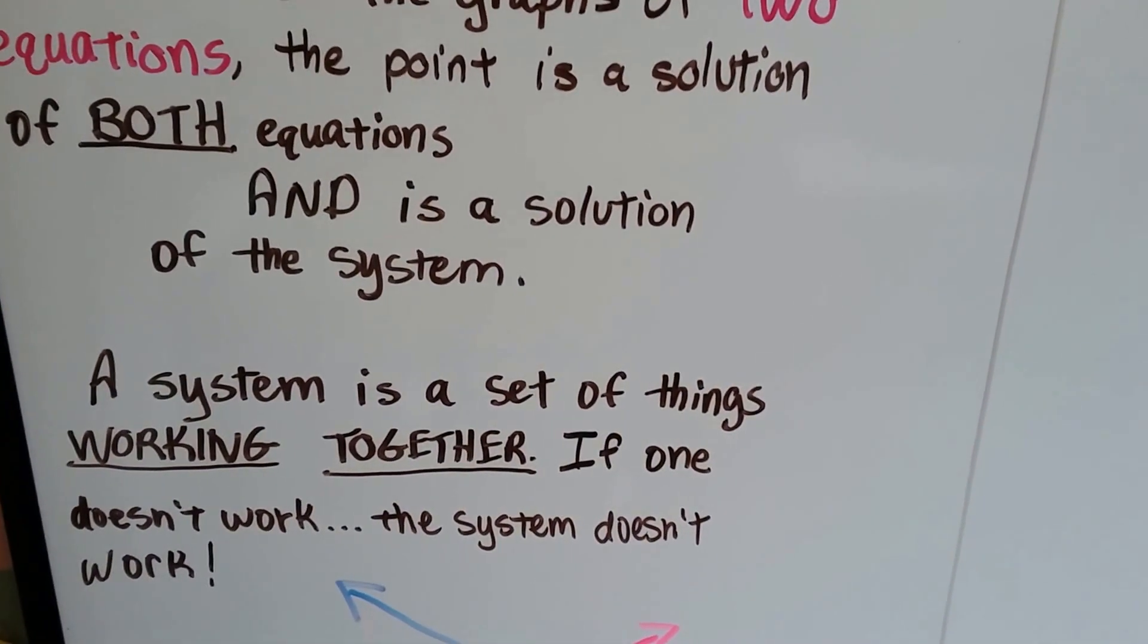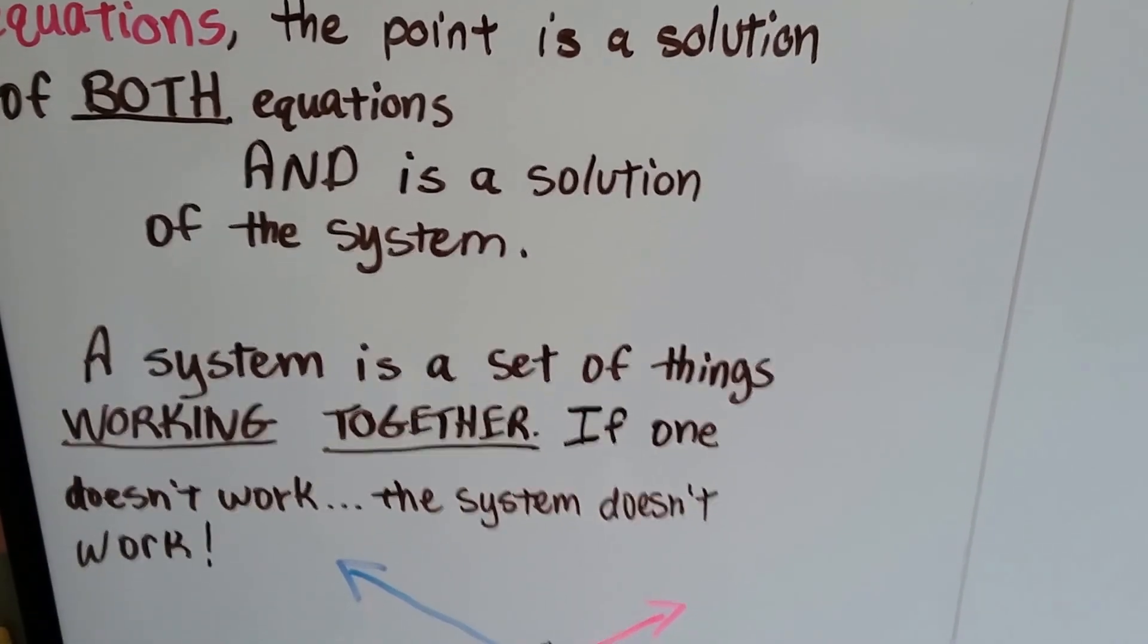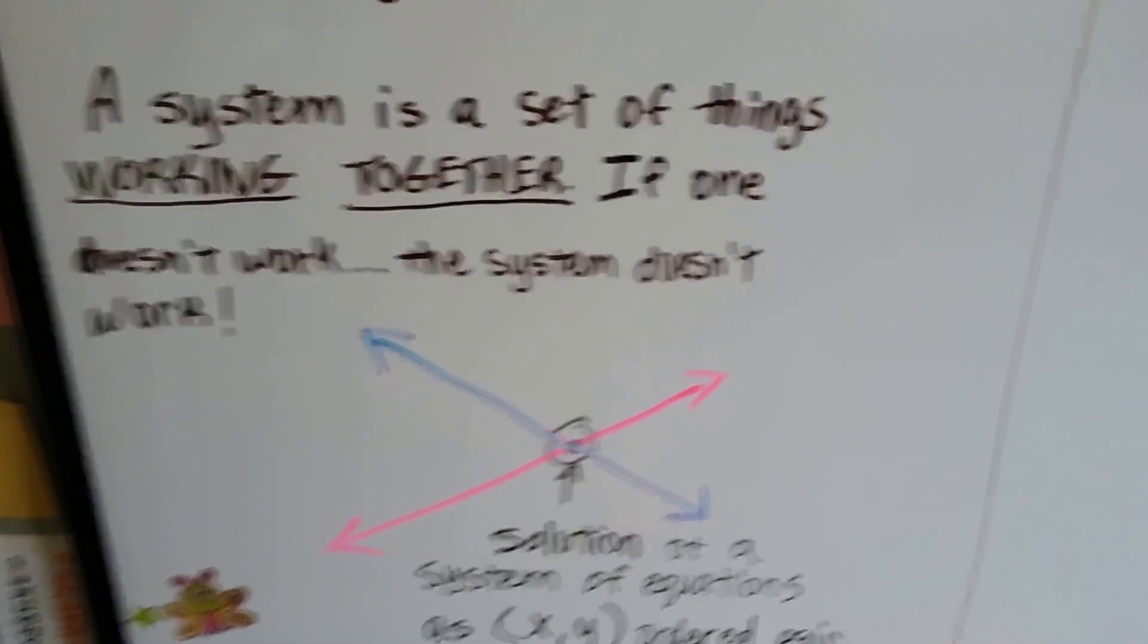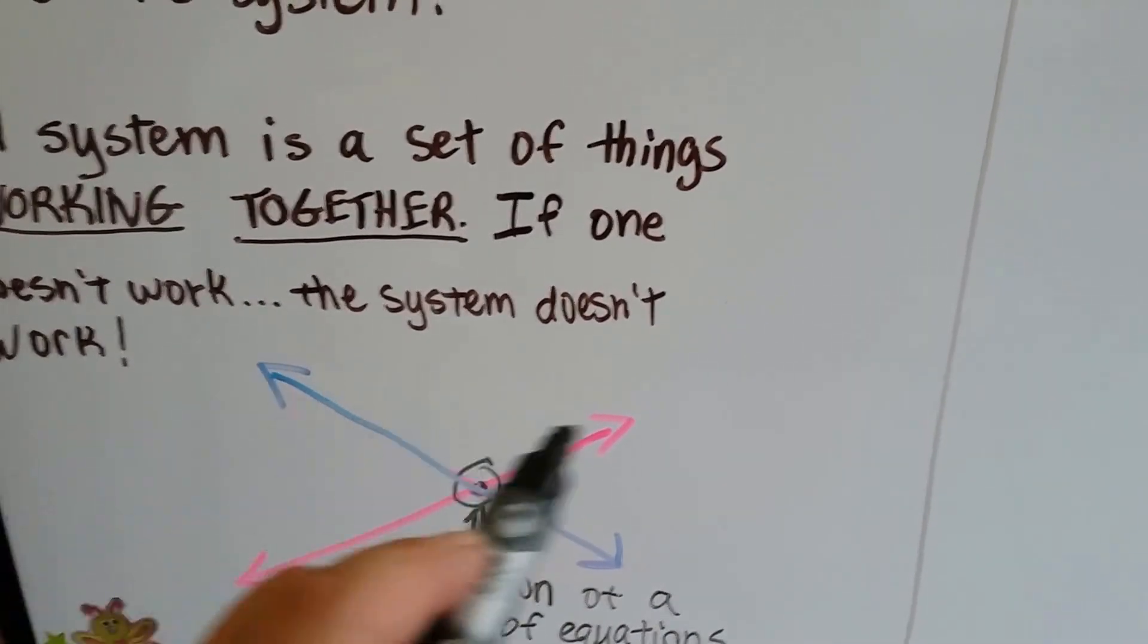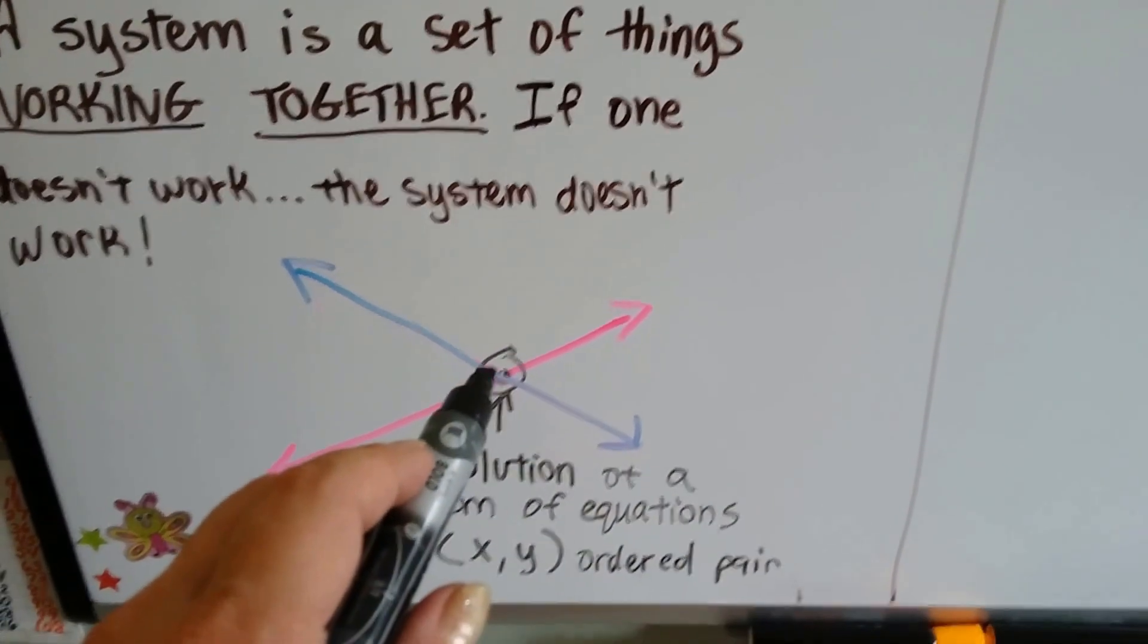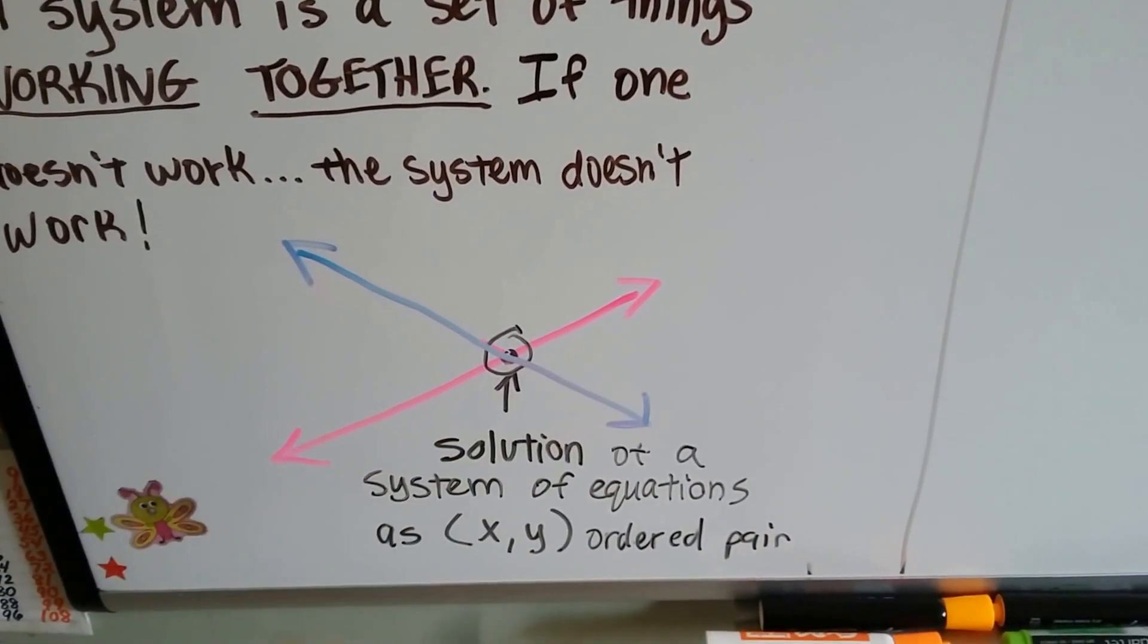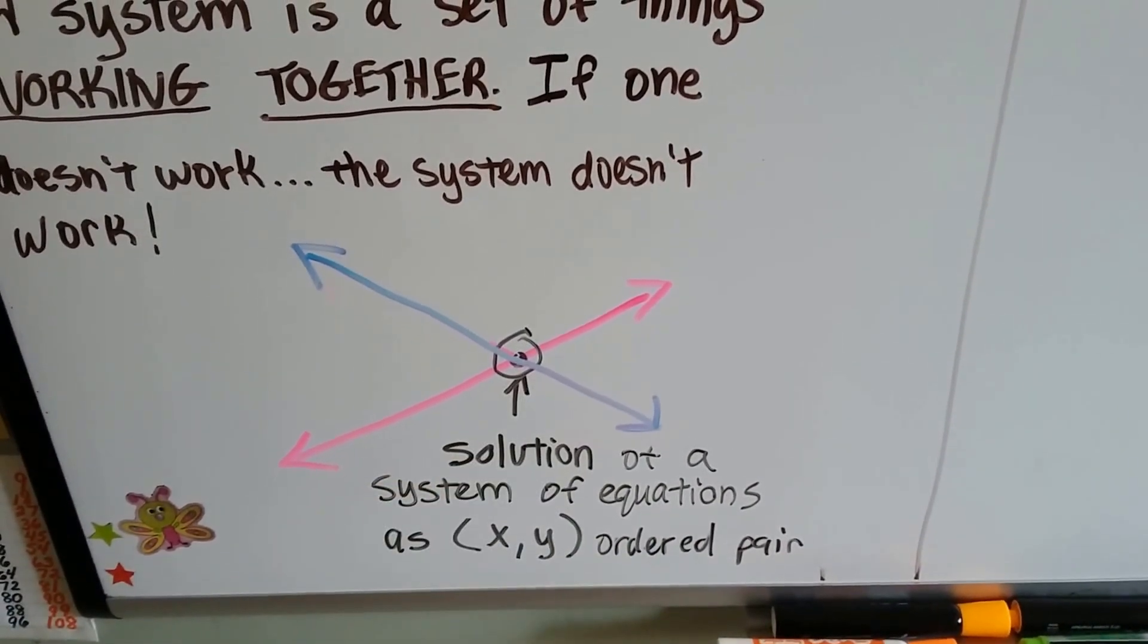A system is a set of things working together. If one doesn't work, the system doesn't work. So if we graph an equation and it turns out to be this blue line, and we graph another equation which turns out to be this pink line, where they intersect, where they cross, that's the solution of the system of equations as an x-y ordered pair.